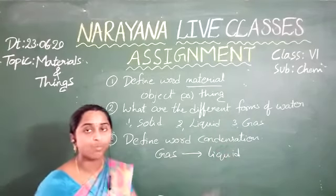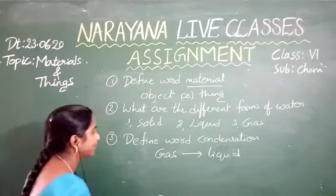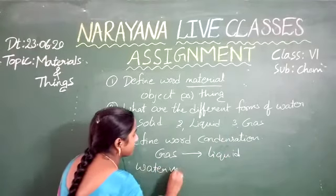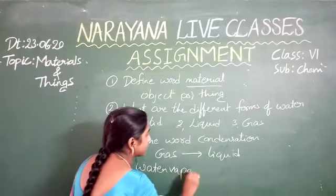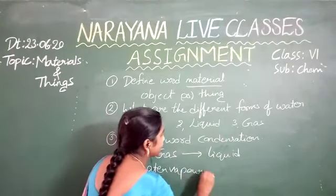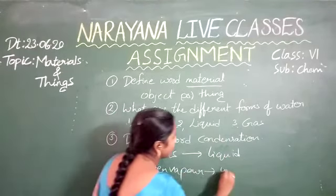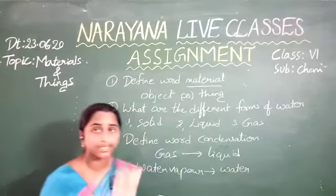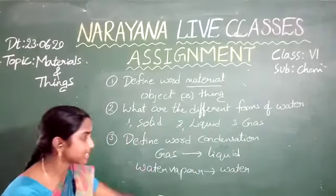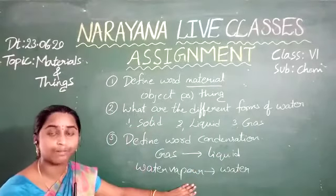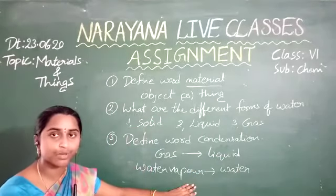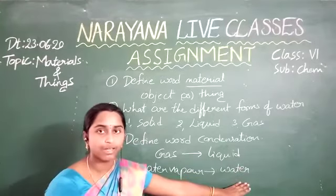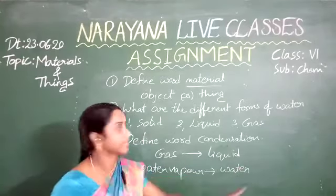Example: water vapor can be converted into water by cooling. This process is called condensation. By the condensation process, water vapor can be converted into the water state.